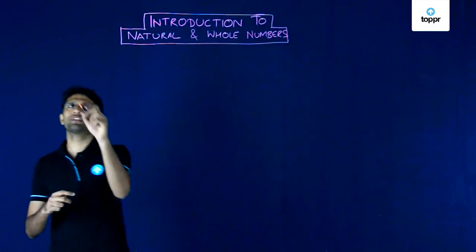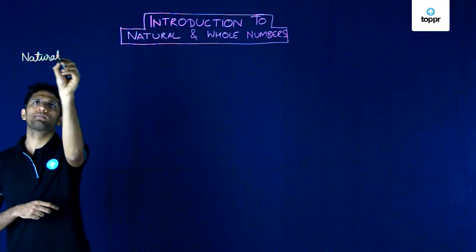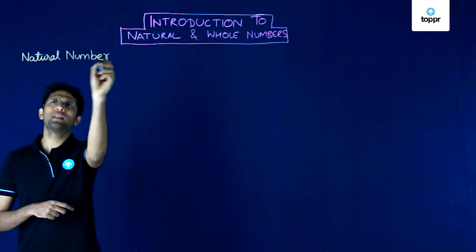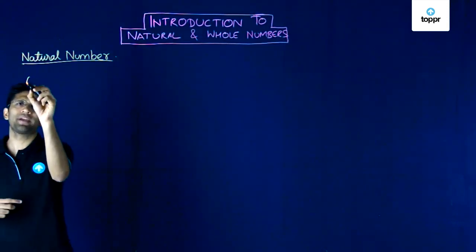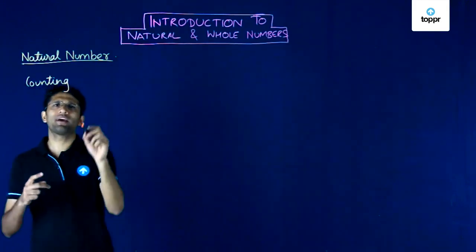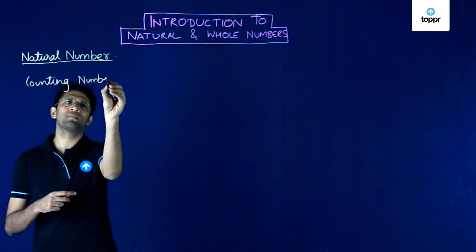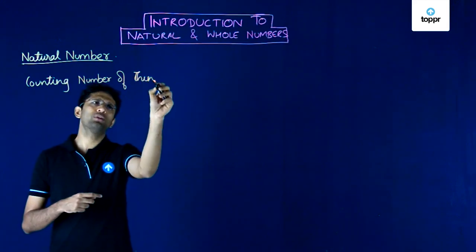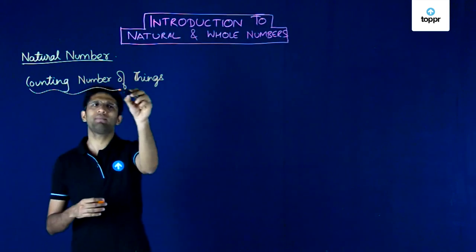We will look at natural numbers first. Natural numbers are all the numbers that come to mind while counting something. So natural numbers come to our mind when we are counting a number of things. If we want to count what is the number of things given to us, the count will be represented by a natural number.